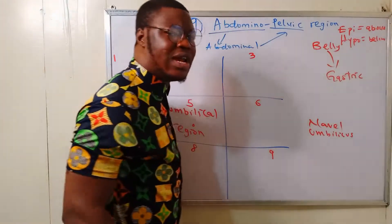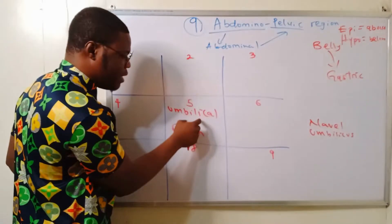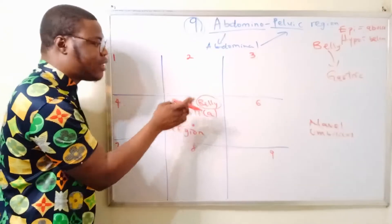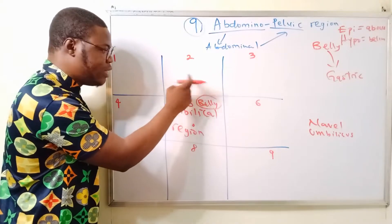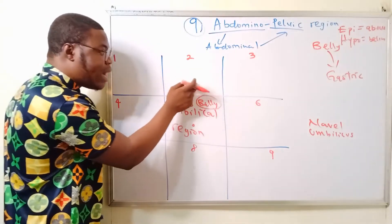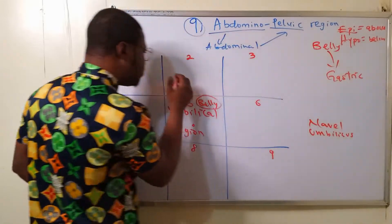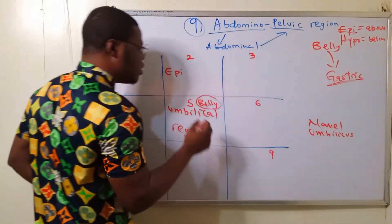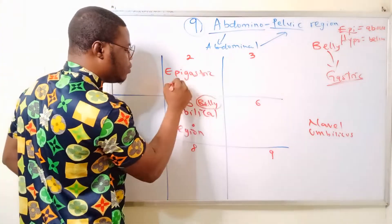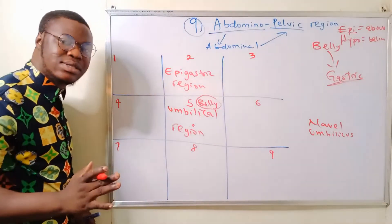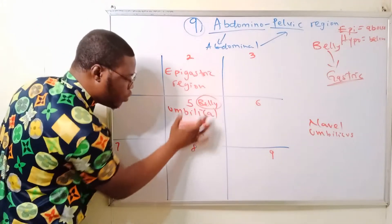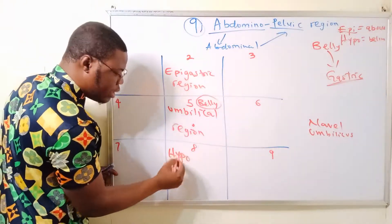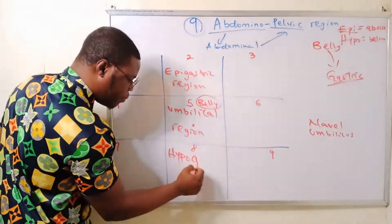If this is our belly region, then the region on top of the belly is a region above the gastric. 'Above' is 'epi,' so it is called the epigastric region. The region below the belly — 'hypo' means below, and belly means gastric — so that region is called the hypogastric region.